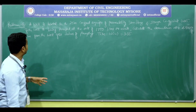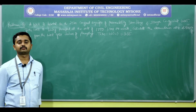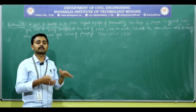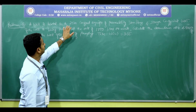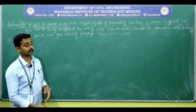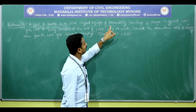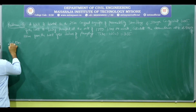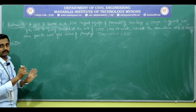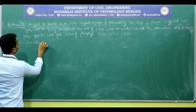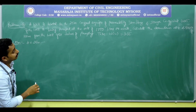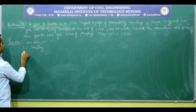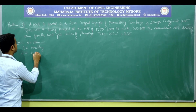Thoroughly understand the given problem — understanding of the problem itself completes half of the problem. Given data: aquifer thickness B = 25 meters (confined aquifer between impermeable layers). Permeability K = 30 meters per day. Storage coefficient S = 0.005.